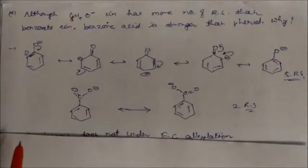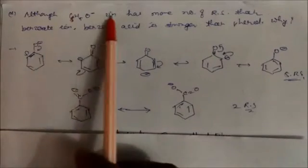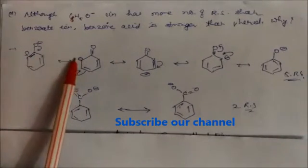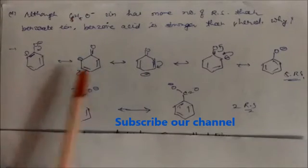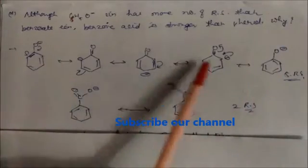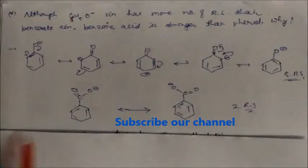Although the phenoxide ion has more resonating structures than the benzoate ion, benzoic acid is stronger than phenol. If you see the structures: the phenoxide ion has five resonating structures, with the negative charge distributed over ortho and para positions of the ring.